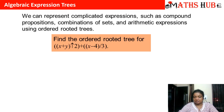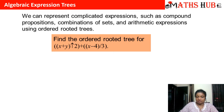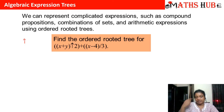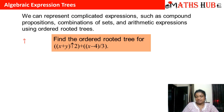Suppose this expression is given to us — you know all the symbols except for the first one, which is 'raised to the power.' So we are saying: (x + y) raised to the power 2, and then we have x minus 4 divided by 3. If I have to express this algebraic expression in the form of a binary tree, how do we make that?